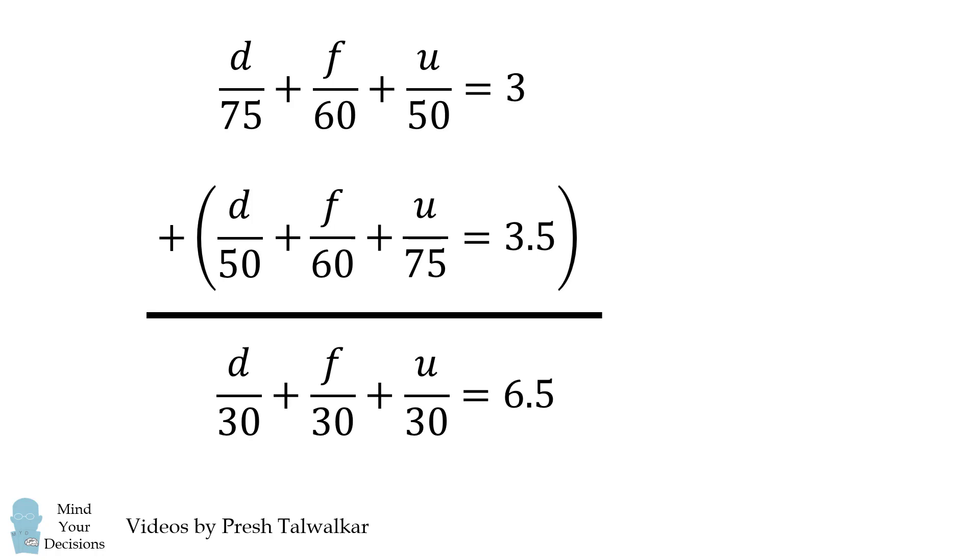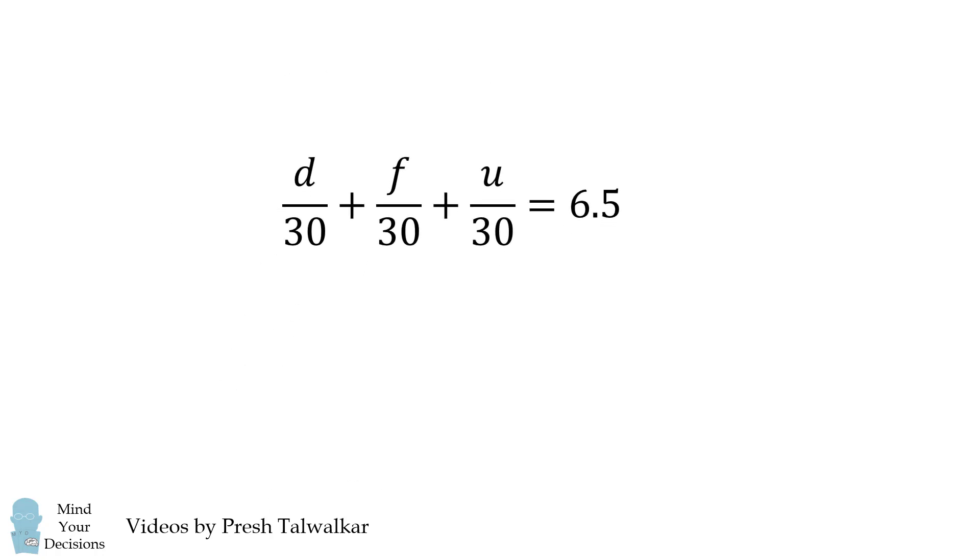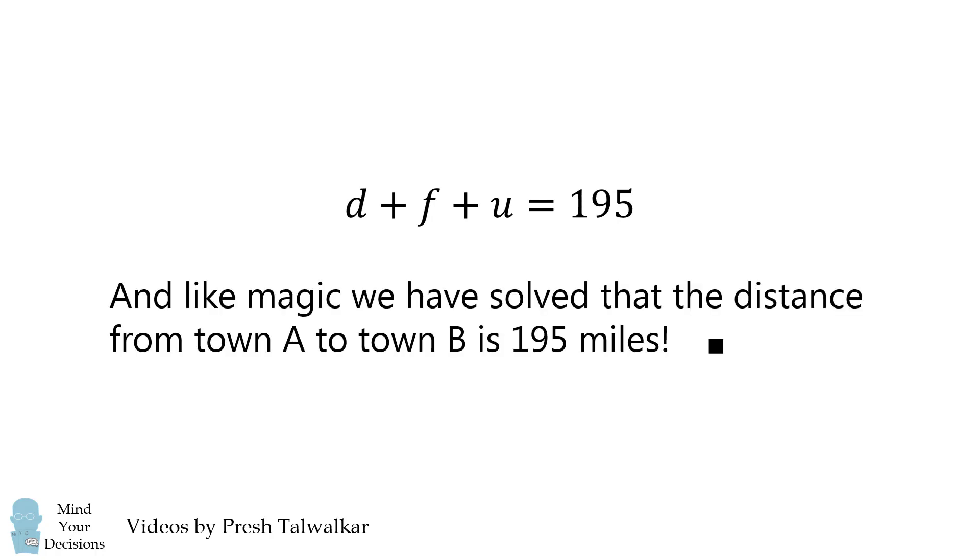We can then simplify each of these fractions to be 1 over 30, and we now have one equation. We multiply both sides by 30 and get rid of these denominators. And we get D plus F plus U equals 6.5 times 30, which equals 195 miles. And like magic, we have solved for the distance between town A and town B, and the answer is 195 miles.